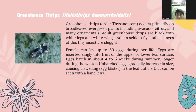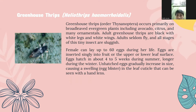Greenhouse thrips, or Heliothrips haemorrhoidalis, occurs primarily on broad-leaf evergreen plants including avocado, citrus, and many ornamentals. Adult greenhouse thrips are black with white legs and white wings, and all life stages are sluggish. Females can lay up to 60 eggs in their lifetime. Eggs are inserted slightly into fruit or the upper or lower leaf surface, hatching in about 4 to 5 weeks during summer and longer during winter. Hatched eggs cause a visible swelling in the leaf cuticle.